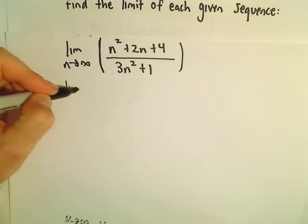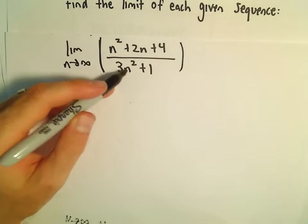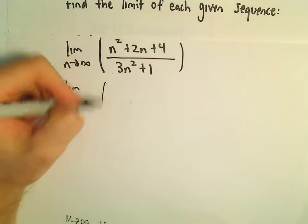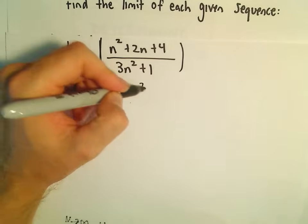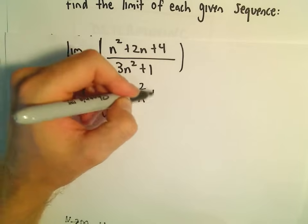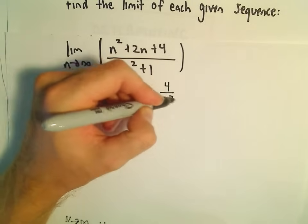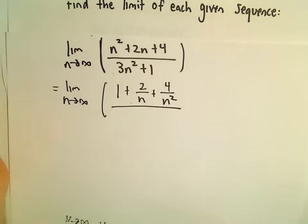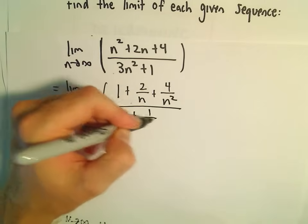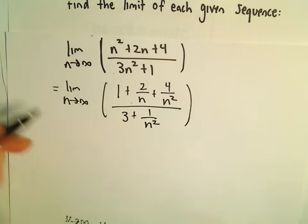But to show it with a little bit more work, we can divide everything by n squared. So n squared over n squared is 1. 2n over n squared will be 2 over n. Then we'll have 4 over n squared. 3n squared over n squared is 3. Then 1 over n squared.